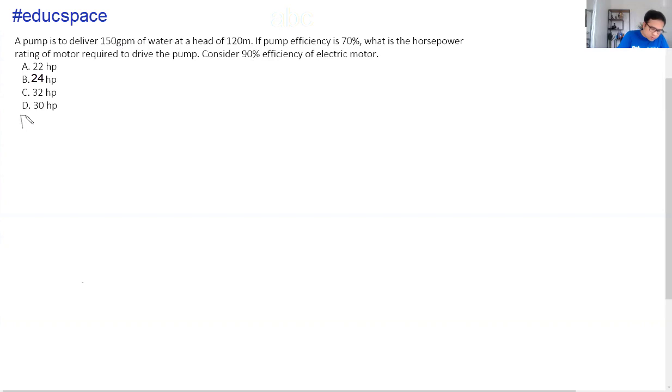So gawalan tayo dito na simple figure and data. Simple illustration wherein we have an electrical motor on the side view coupled directly to a pump. So let's take this as our point number one and then point number two. Again, mayroong efficiency na binigay para sa electrical motor which is ηM is 90% and then pump efficiency, ηP, is equivalent to 70%.